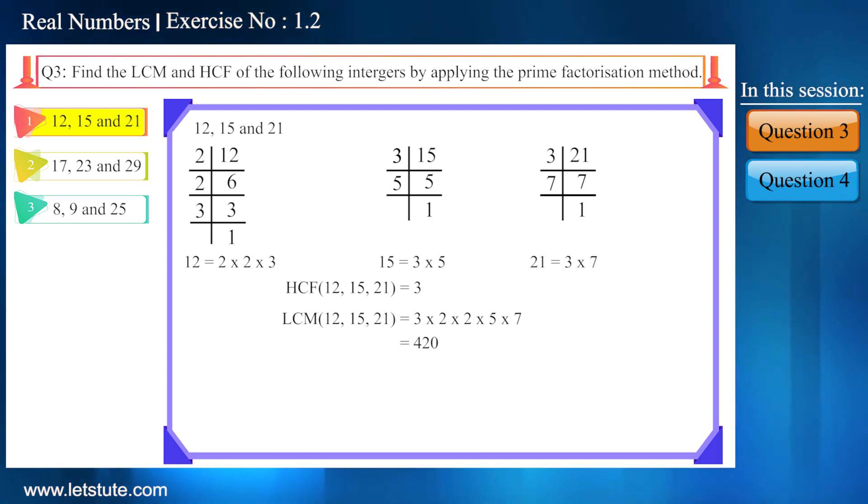Friends, as we know that the product of two numbers is equal to the product of its HCF and LCM, but would this type of rule hold true for three numbers as well? Let's verify it. For these numbers, we got the product of these three numbers as 3780.